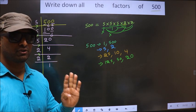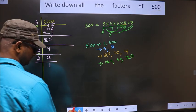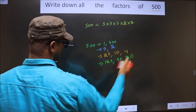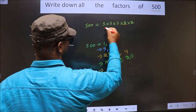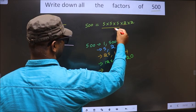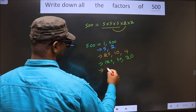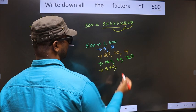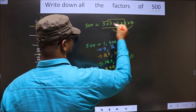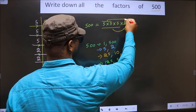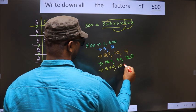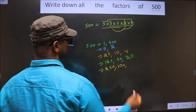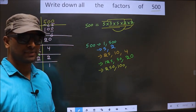Now take combinations of 4 numbers. Fix 5×5×5=125, combine with 2 to get 250. Combining with the other 2 gives the same number. Now take 5×5×2=50 and combine with 2 — 50×2 gives 100. Even taking those other 4 numbers also gives 100. No other combinations are possible.